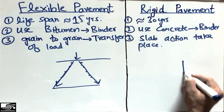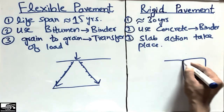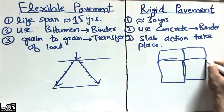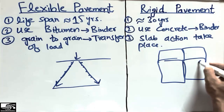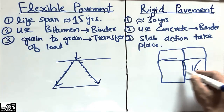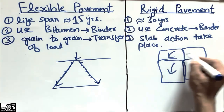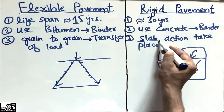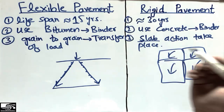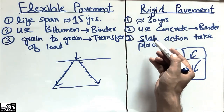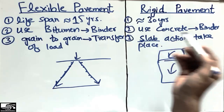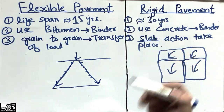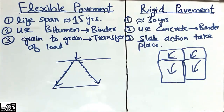In the case of rigid pavement, consider these are the slabs. The load acts on the slabs, they bend, and they transfer the load — just as we know how a slab transfers load in an RC structure. So the load transfer happens by slab action.